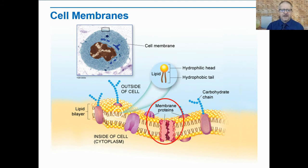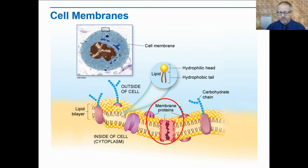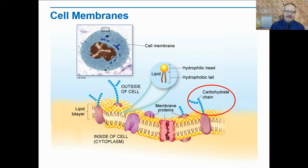We also have membrane proteins. These are proteins stuck into the membrane that provide assistance to molecules too large to fit through the semi-permeable phospholipid bilayer. They create a channel that allows other molecules to pass into or out of the cell. We also have carbohydrate chains attached to the proteins — they act as flags that identify the cell in some specific manner. We'll learn more about carbohydrate chains as we move through the next couple chapters.